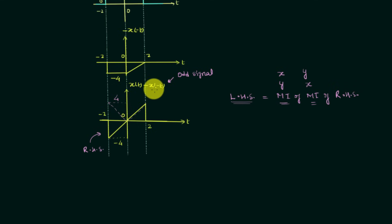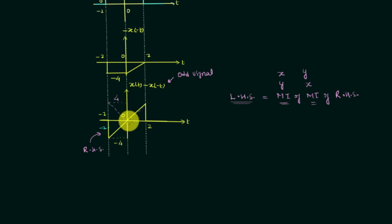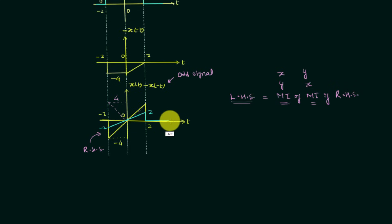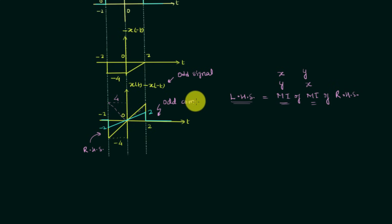To obtain the odd component XO(t) we divide by 2, multiplying by 0.5 — amplitude scaling. This gives minus 2 at t = minus 2, 0 at t = 0, and 2 at t = 2. When t is greater than 2 the signal is 0. Joining these three points gives the blue waveform, which is the odd component XO(t) of signal X(t).